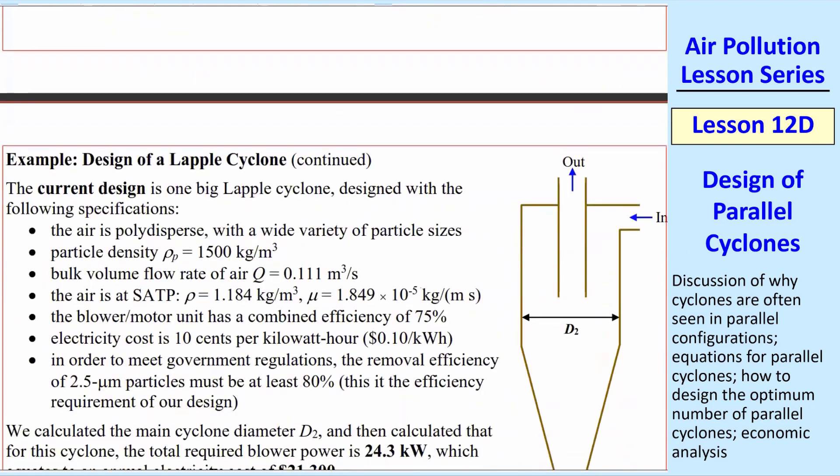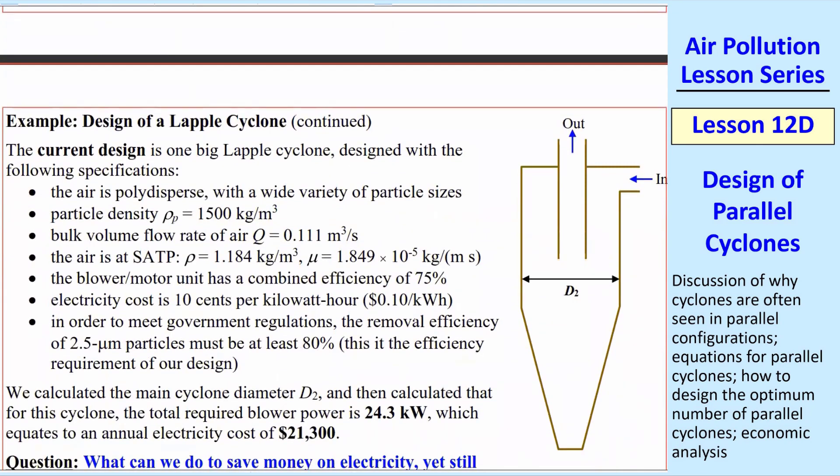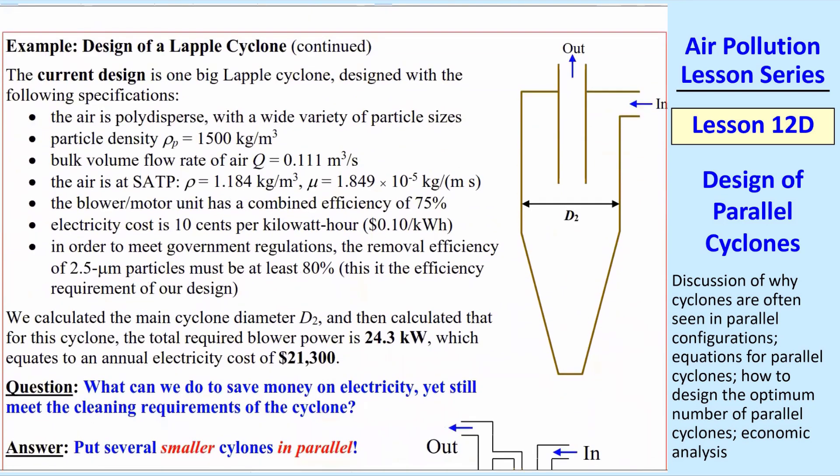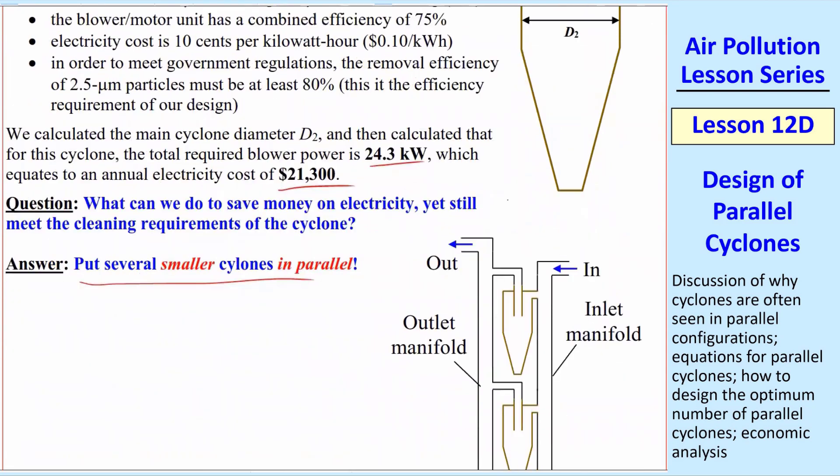So now let's look at the same thing. Just a quick review. The current design is one big Lapple cyclone with all the same specifications that we had before. I just relisted them. And what we got was that with that one cyclone, we had 24.3 kilowatts or $21,300. And so the question is, what can we do to save money on electricity, yet still meet all the cleaning requirements? And that's where, as you may have already guessed, we put several smaller cyclones in parallel.